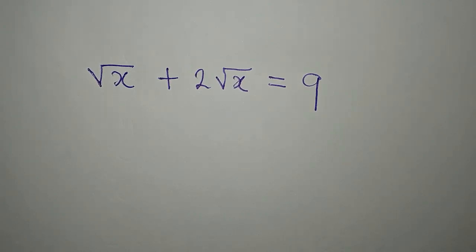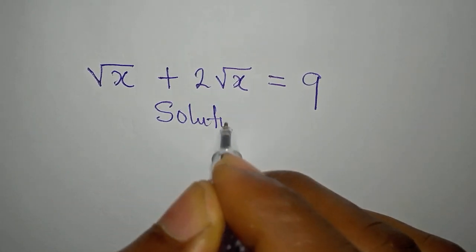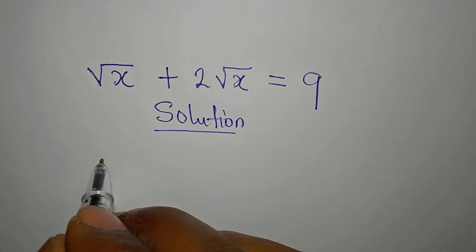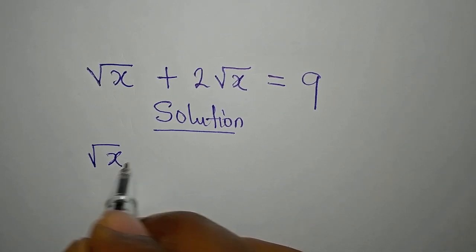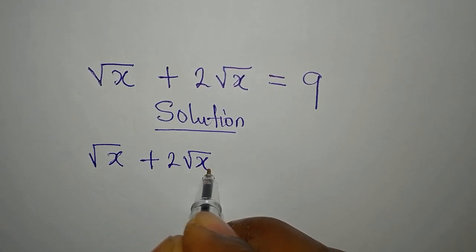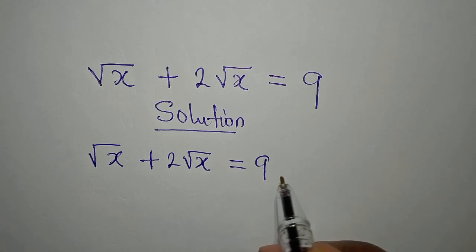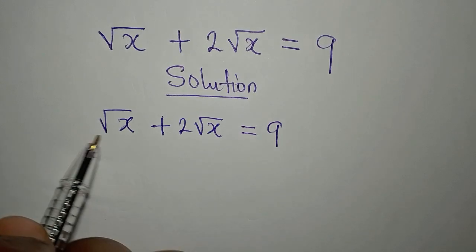Hello everyone, let's provide the solution to this problem very quickly. We have square root of x plus 2 square root of x equals 9. Now from here you should be able to know that these are the same roots.